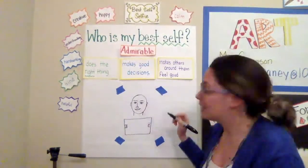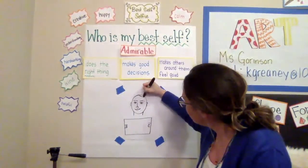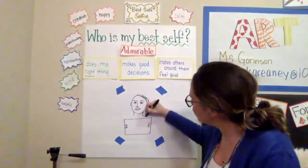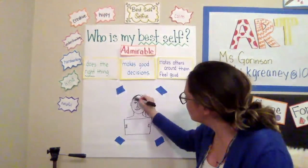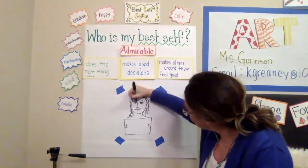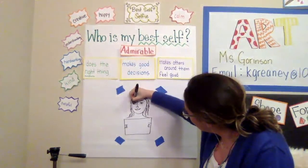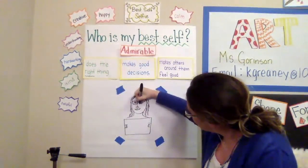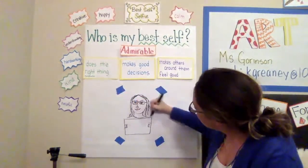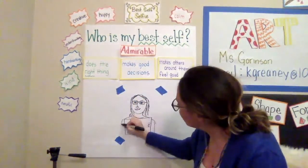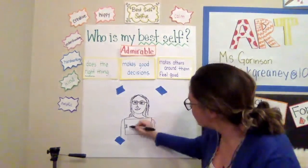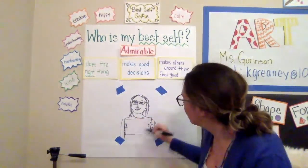Now we're going to think about details that look like us. I'm going to draw my hair — even though it's up right now, maybe I'll draw myself with my hair down. I need shoulders, and I definitely need to put on my glasses; I have those on every day. I'll give myself a shirt, and then the rest of my body coming down — my arms, my hands.